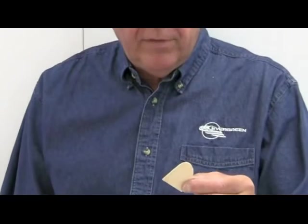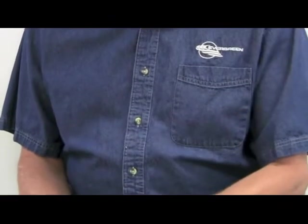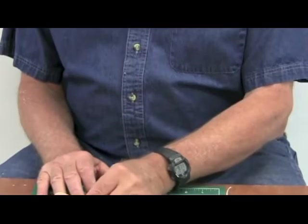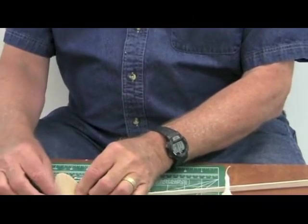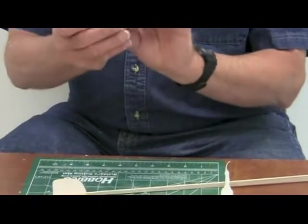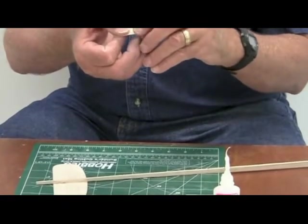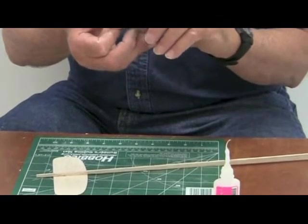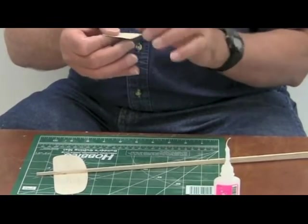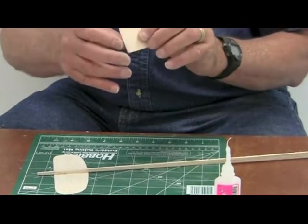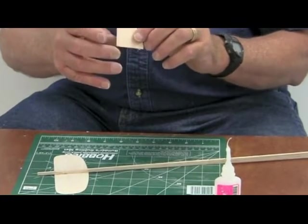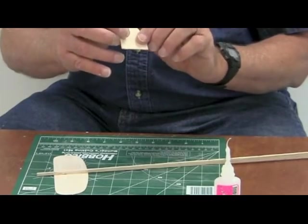The next step after the stabilizer has dried and is on there pretty solid is to glue on the fin. The fin, if you look at the plans carefully, you'll notice the fin does not glue on the very top, but instead glues on the side of the fuselage. It also has a very small incidence wedge glued on the side of it. There's a piece of 1/32nd balsa wood, and it's there to give it glide turn. So when you launch the model, this helps establish the glide.